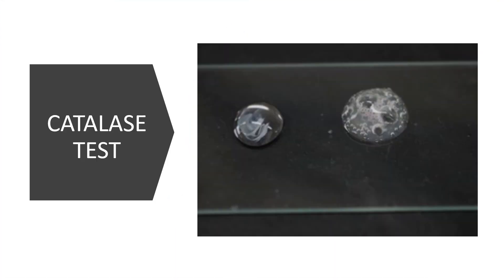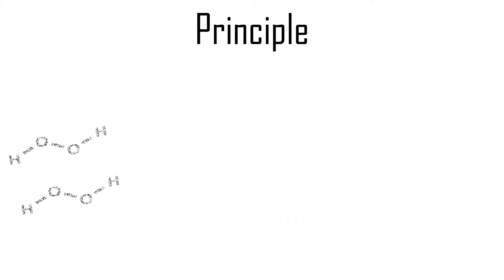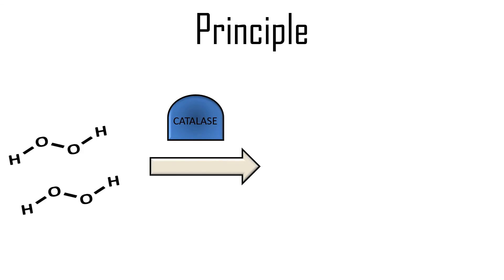In this video we are going to discuss the catalase test. This test demonstrates the presence of catalase, an enzyme that catalyzes the release of oxygen from hydrogen peroxide. It is used to differentiate bacteria that produce catalase, such as staphylococci, from non-catalase-producing bacteria such as streptococci.